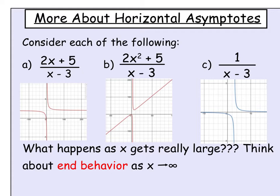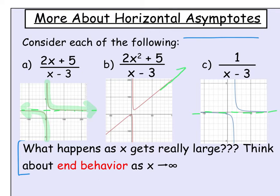A horizontal asymptote is a horizontal line running left to right. What it comes down to is what is happening as the x-values get really large. On these graphs, the first one kind of flattens out on both sides as x gets really large or really small. The second one goes to infinity on one end and negative infinity on the other. The third one also flattens out.